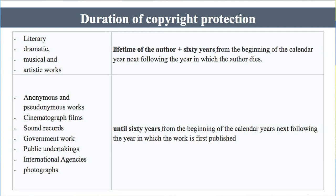For anonymous works — where the author does not reveal their identity — and pseudonymous works — where the author writes under another name — as well as cinematograph films, government works, public undertakings, international agencies, and photographs, the duration is 60 years from the beginning of the calendar year next following the year in which the work is first published. For example, if a movie comes out in 2022, then from 2023 onwards, the next 60 years apply.